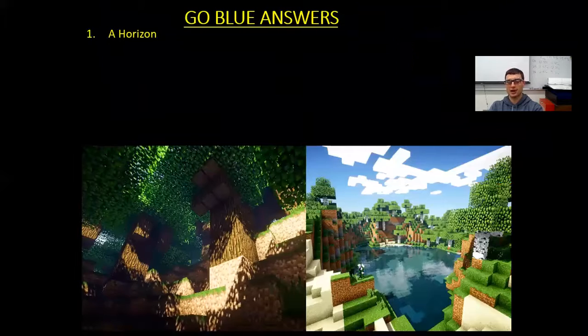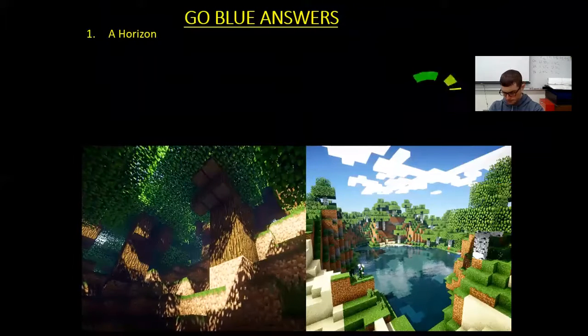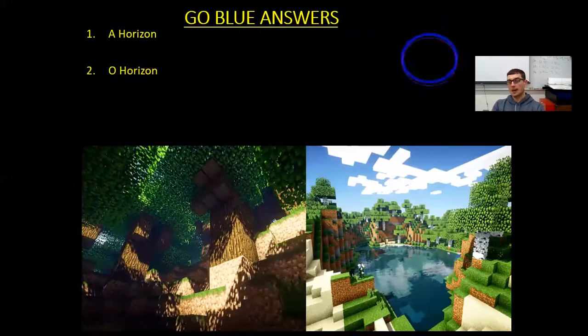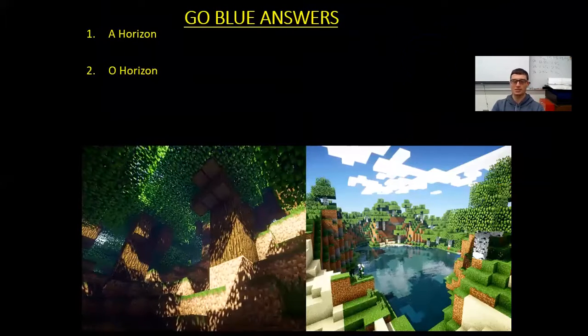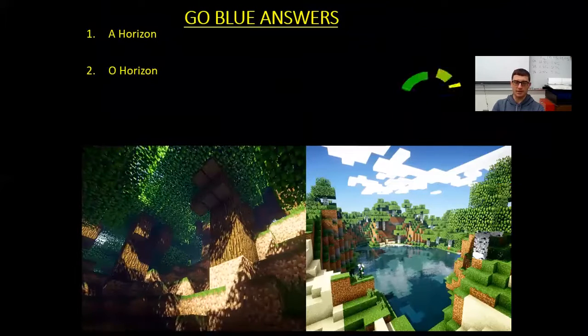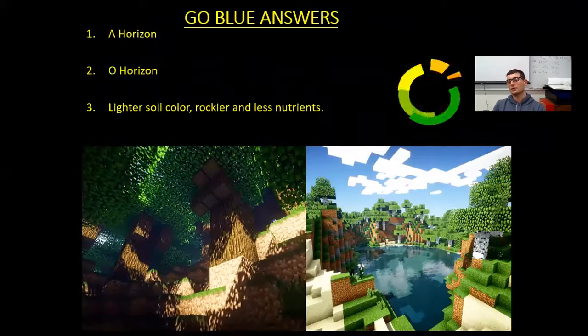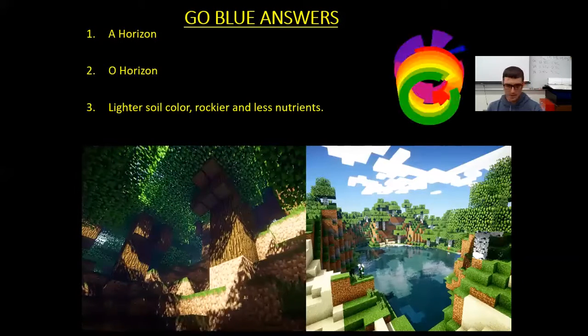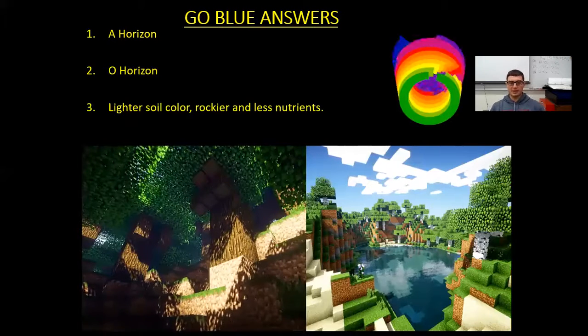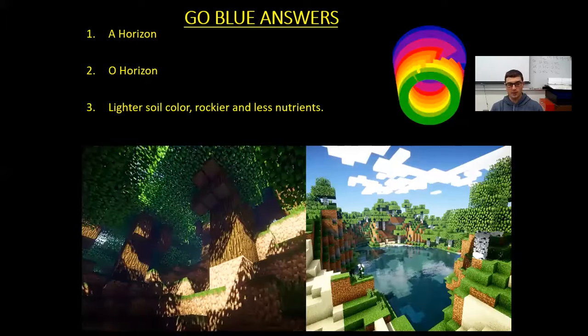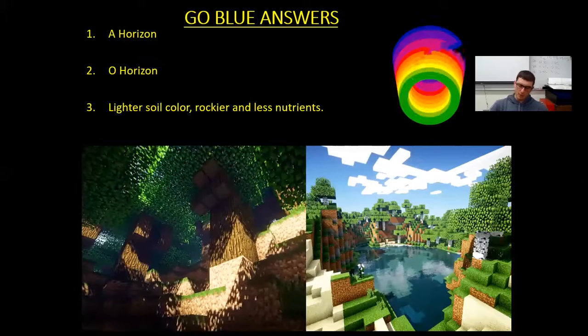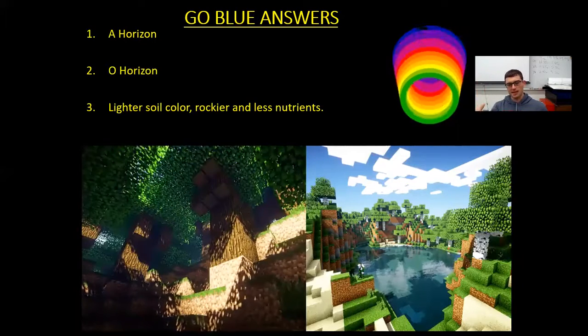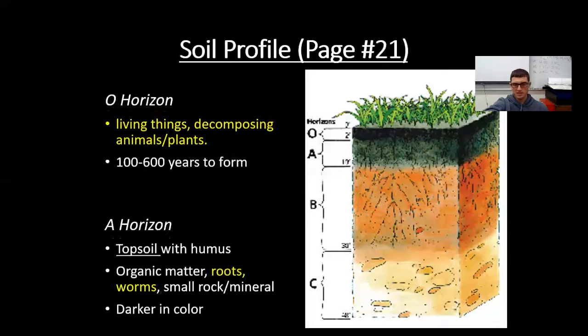Number one, the A horizon. The A horizon has the plant roots, some of the worms, some of the things just below the surface. Number two, the very top horizon, which may get some people, because a lot of people always assume it's A horizon. The top horizon is actually going to be the O horizon, the organic horizon. And then number three, the farther you go down, the lighter the soil color is, the rockier the soil is, and the less nutrients it has. So lighter soil color, rockier, and less nutrients. Because the farther you go down, the more you'll hit the bedrock, less nutritious, and the lighter the soil color will be. It'll go from kind of a darker brown soil color, and then it'll get to like a tan color all the way to when it gets to those rocks.